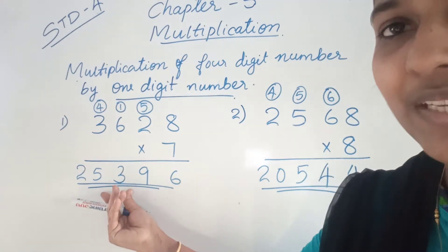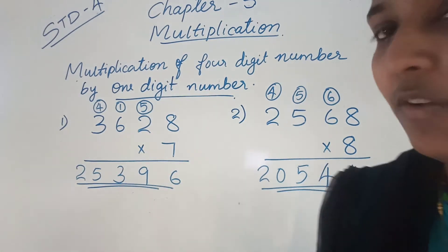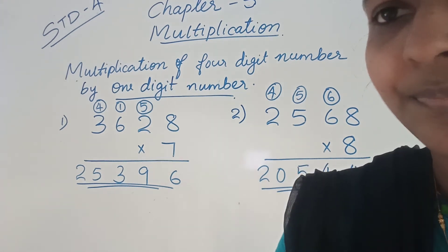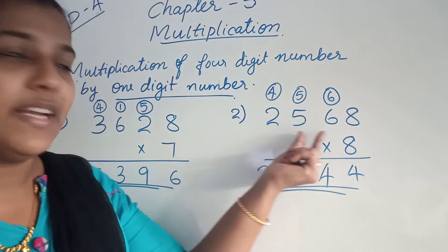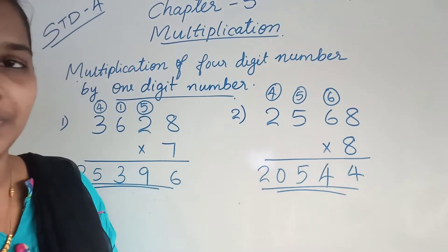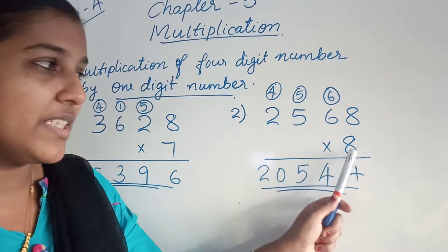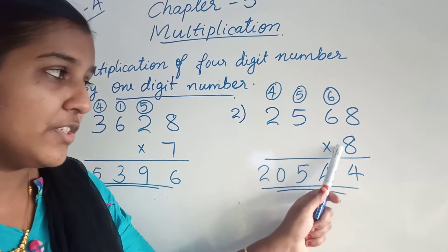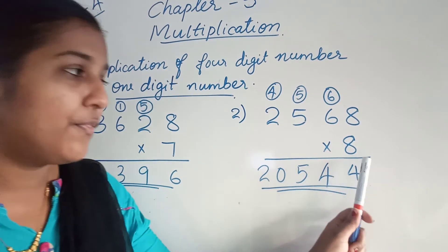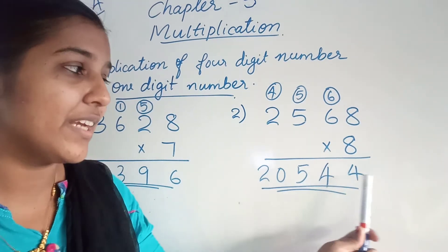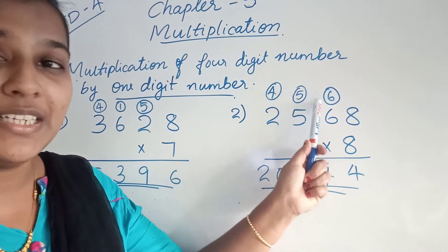Children, this is the way to multiply a 4-digit number by a 1-digit number. Now we will move to the next example question. The question is 2,568 × 8. To answer this question, you should know the table of 8. First, multiply 8 with 8. 8 eights are 64. From 64, you write 4 here and 6 carry over to the next place, that is the tens place.